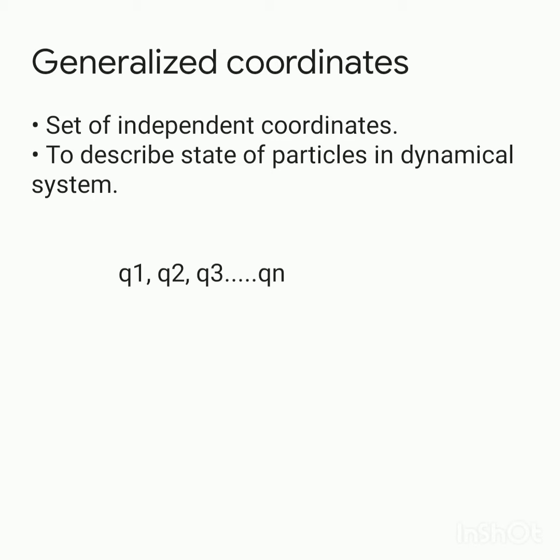In such way, generalized coordinates are a set of independent coordinates which are used to describe the state of a particle in a dynamic system. It can be represented as q1, q2 up to qn.